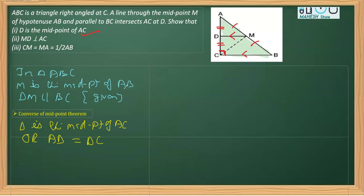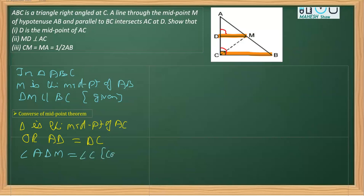In the next part, we have to prove MD is perpendicular to AC — that means we need to prove one of the angles ADM or CDM equals 90 degrees. Here we are going to use the property of corresponding angles. Since DM is parallel to BC and AC is acting as a transversal, these two angles are equal. So we write: angle ADM is equal to angle C, and the reason is corresponding angles are equal when lines are parallel.